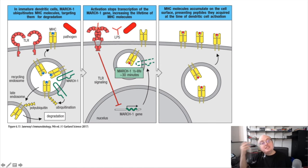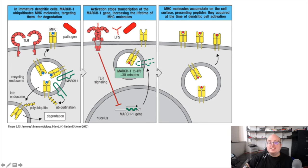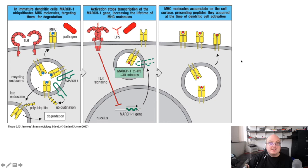However, if the cell becomes activated — for example, when it recognizes a bacterium or a virus through the TLR pathway — pattern recognition receptor activation and other cytokine signals actually inhibit the transcription of MARCH1. So as the dendritic cell becomes activated, it decreases the expression of MARCH1. If we have less MARCH1, then we have less ubiquitination of MHC class II, so more MHC class II sticks around, facilitating more antigen presentation through the MHC class II pathway.